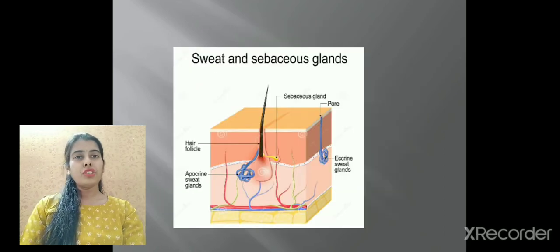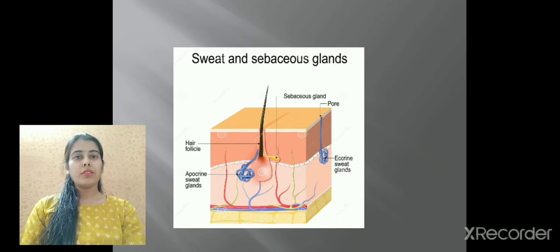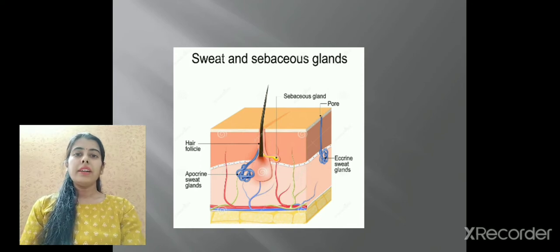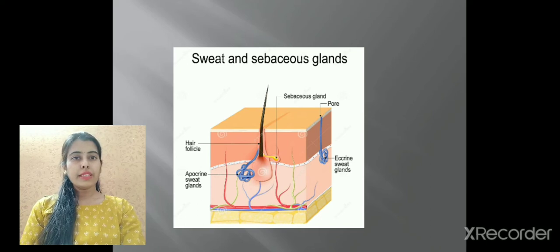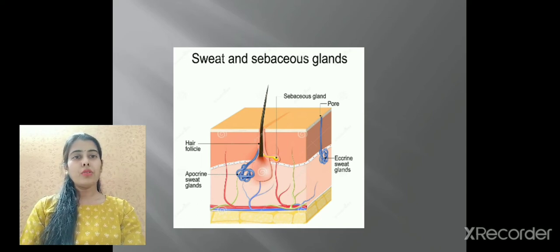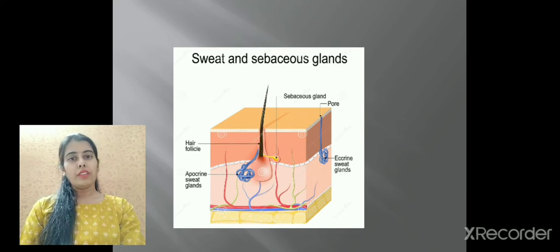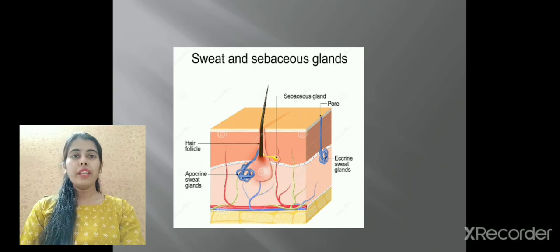One more mode of excretion we have is sweat glands, or sebaceous glands. These glands help in eliminating excess water, and some salts are also excreted. This helps in cooling down the body. Evaporation of sweat brings a cooling effect.